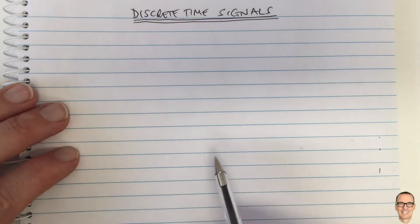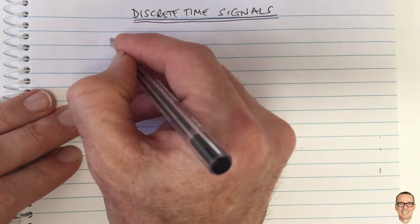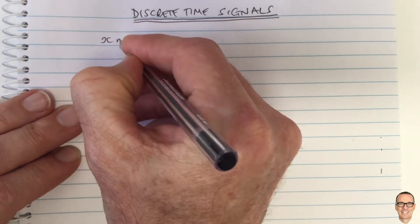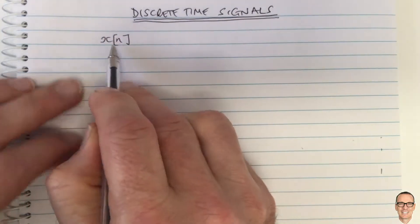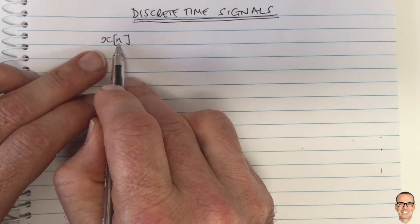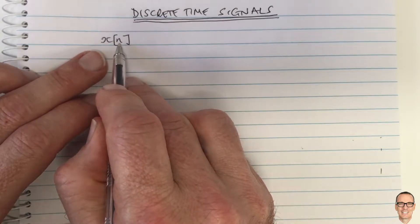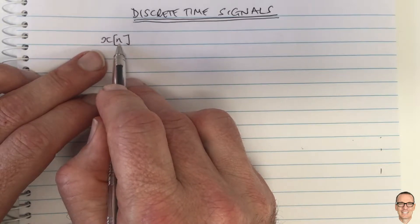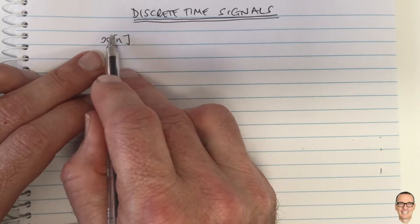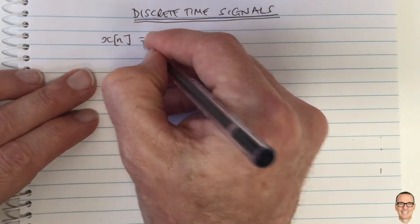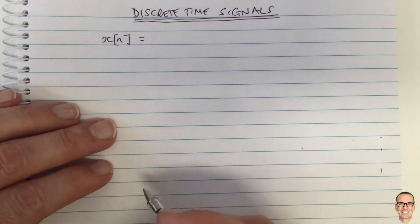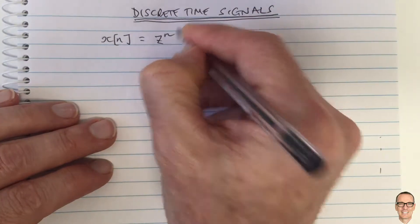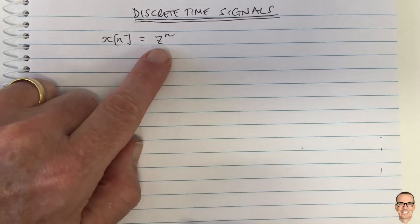Let's discuss discrete time signals. We use n for the integer counter, where we had t in continuous time. Now we've got n in discrete time - it's just integers. We use square brackets for discrete time signals, that's the convention. A very important signal is